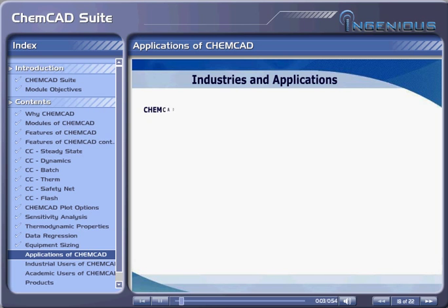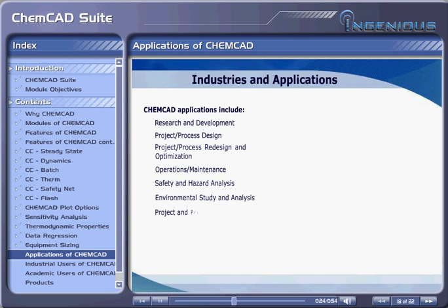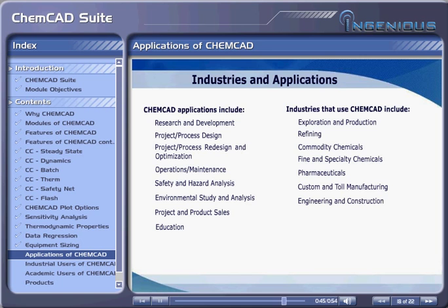Industries and Applications. ChemCAD applications include research and development, project and process design, project and process redesign and optimization, operations and maintenance, safety and hazard analysis, environmental study and analysis, project and product sales, and education. Industries that use ChemCAD include exploration and production, refining, commodity chemicals, fine and specialty chemicals, pharmaceuticals, custom and toll manufacturing, engineering and construction, consulting, process equipment manufacturing, and academic university programs.